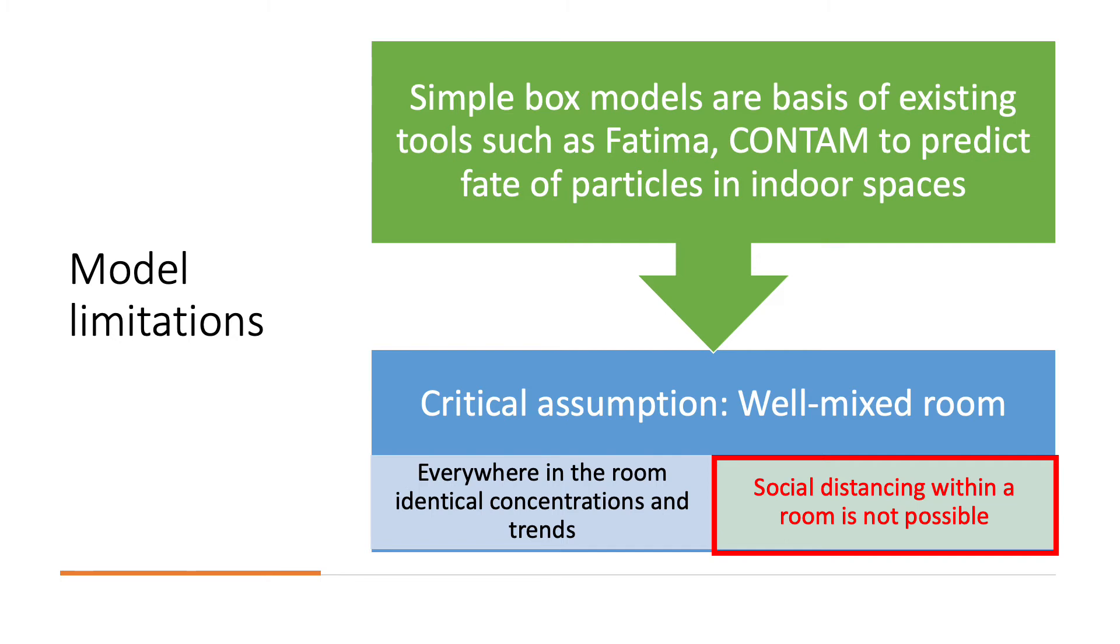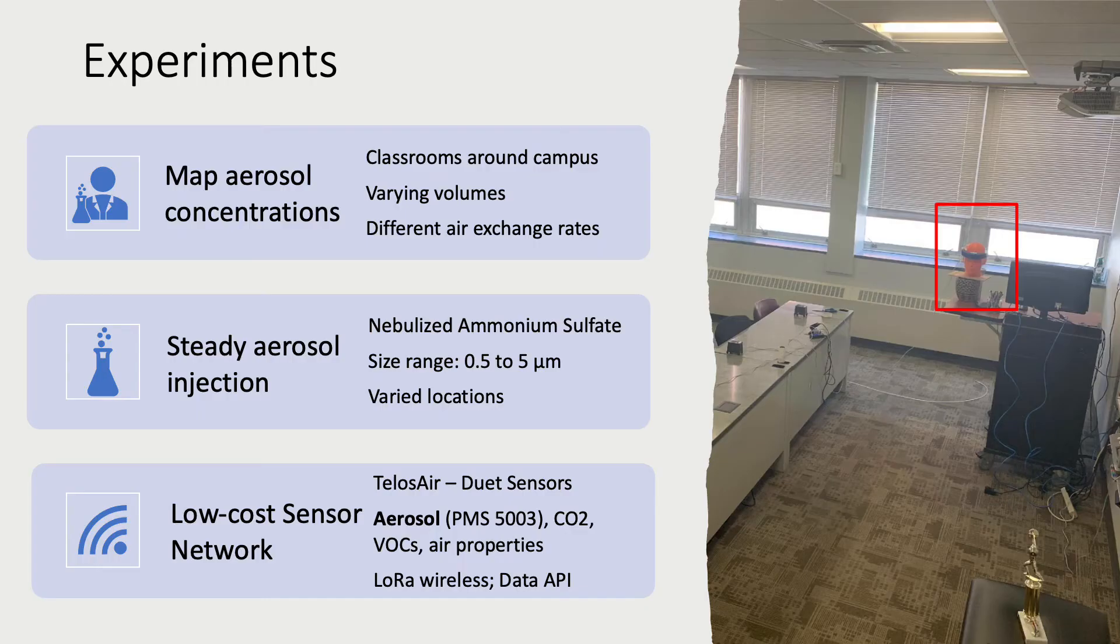Based on these assumptions, we cannot predict social distancing. As a matter of fact, if the concentrations are identical everywhere, we would say social distancing is not possible within a room for these particles, 500 nanometers to 5 micron, these airborne particles in this limited size range.